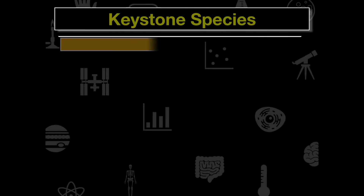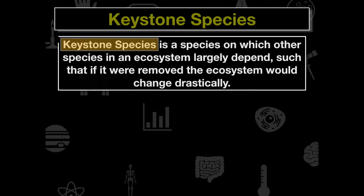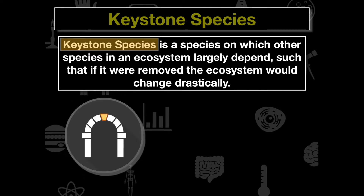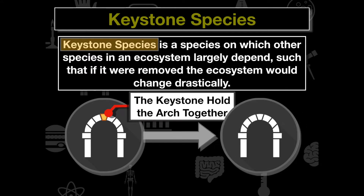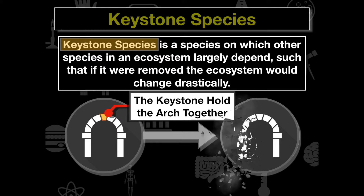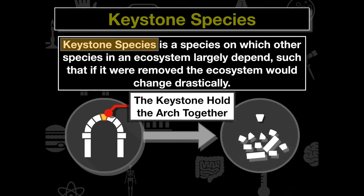Remembering from our last series, a keystone species is a species on which other species in an ecosystem largely depend, such that if it were removed the ecosystem would drastically change. Remember, the keystone is that center stone — it holds the entire arch together, and if it were not present the entire arch would collapse. This is why we call these organisms keystone species.